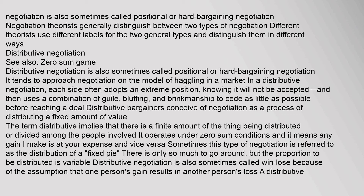Distributive negotiation is also sometimes called positional or hard bargaining. It tends to approach negotiation on the model of haggling in a market. In a distributive negotiation, each side often adopts an extreme position, knowing it will not be accepted, and then uses a combination of guile, bluffing, and brinkmanship to cede as little as possible before reaching a deal. Distributive bargainers conceive of negotiation as a process of distributing a fixed amount of value. It operates under zero-sum conditions — any gain I make is at your expense and vice versa. Sometimes this type of negotiation is referred to as the distribution of a fixed pie. There is only so much to go around, but the proportion to be distributed is variable.